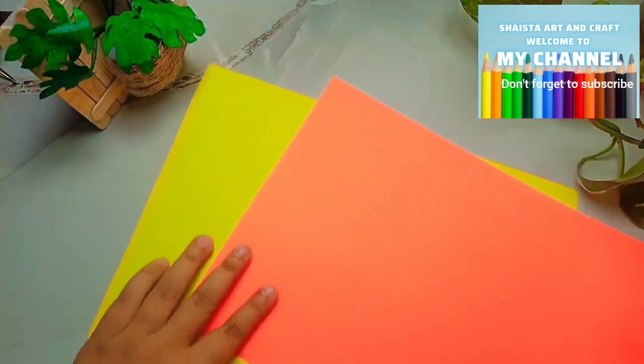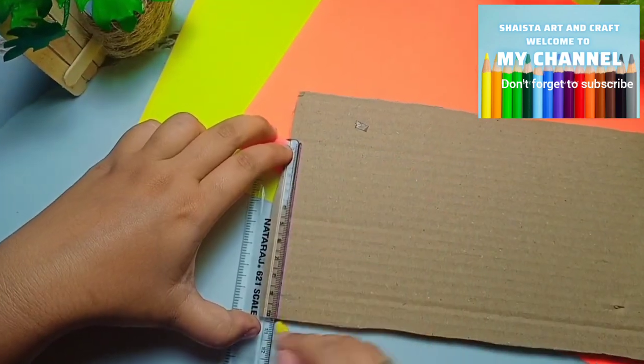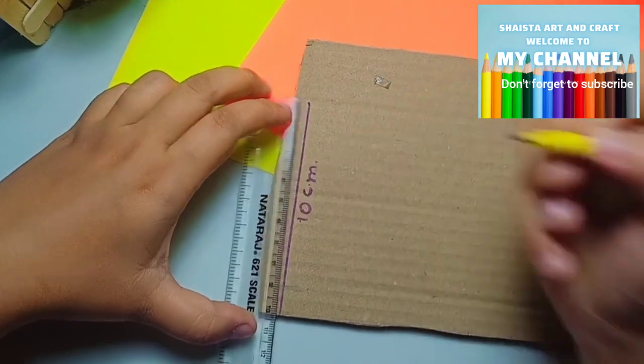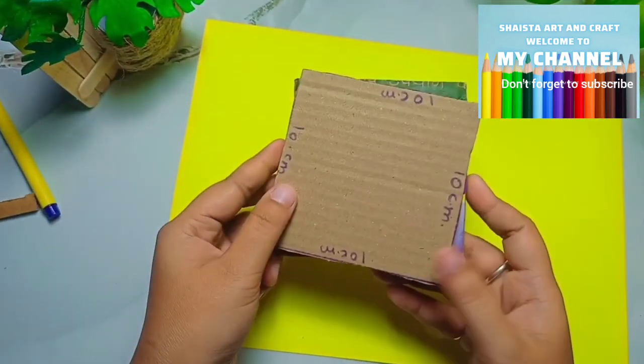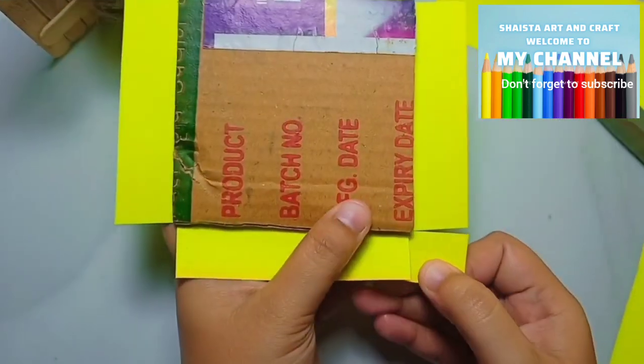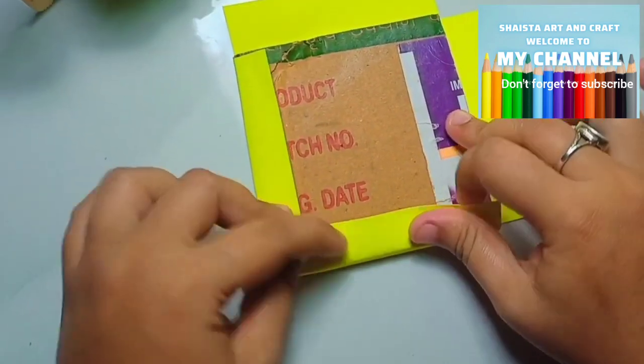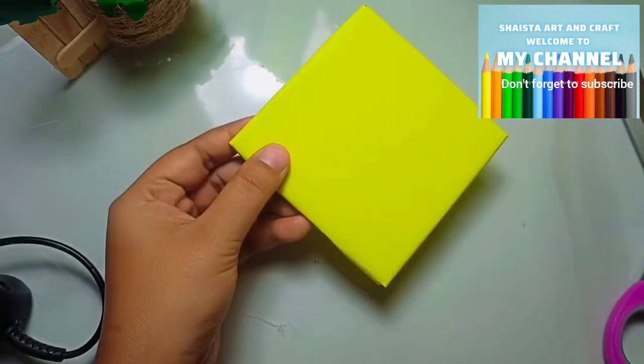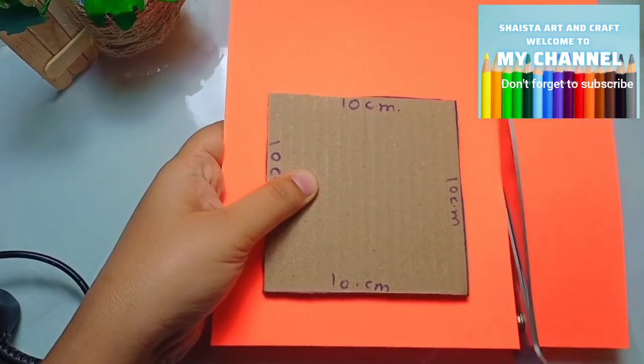Let's go to craft number 3. For this, I brought A4 sheets in bright color, orange and yellow, and 10 by 10 cm cardboard cut. I cut it in a square shape so we can easily fold it. I have to paste it.